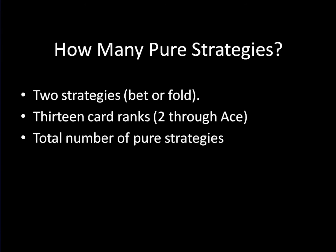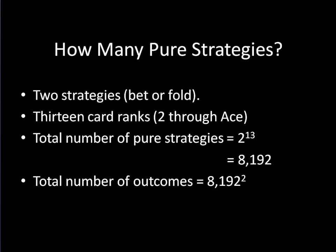So how many pure strategies are there? Nature can deal 13 different cards and there are two actions for every card. So for example, a pure strategy for this game is to fold everything, or fold two and bet everything else, or fold two, three, four, and eight and bet everything else, and so on. Given there are two strategies and 13 different types of cards, we're looking at two to the 13 number of strategies, or 8,192 strategies. And keep in mind that's just for one player. The second player has an equal number of strategies available, so there are 8,192 squared outcomes, which is 67,108,864 total outcomes.